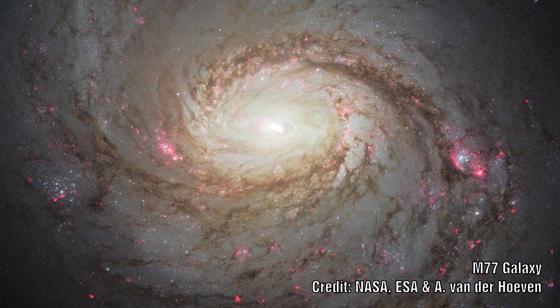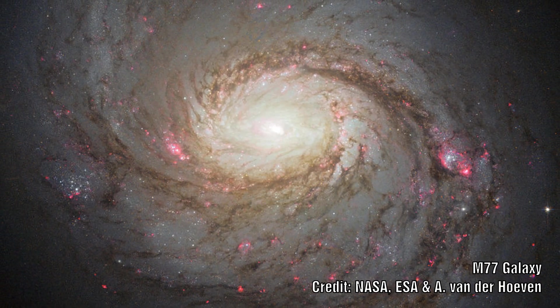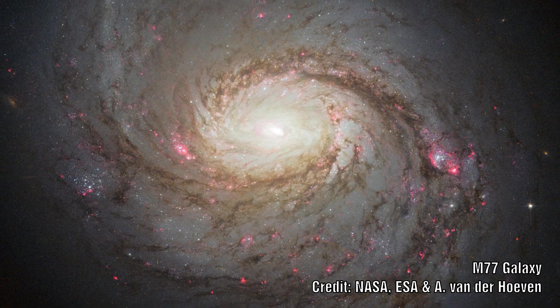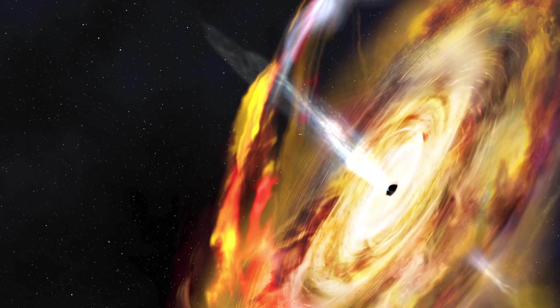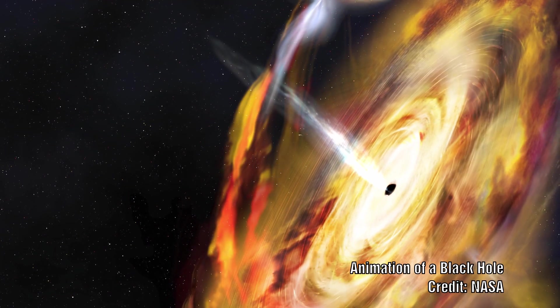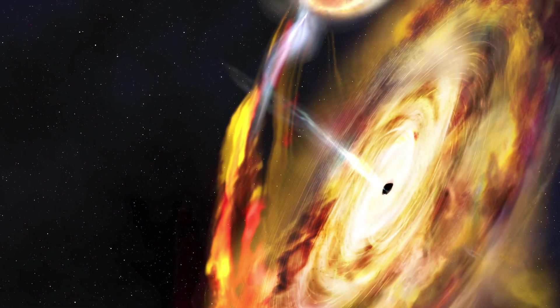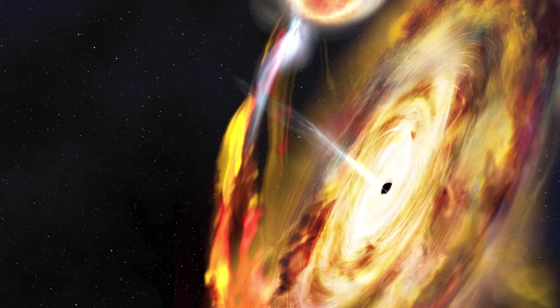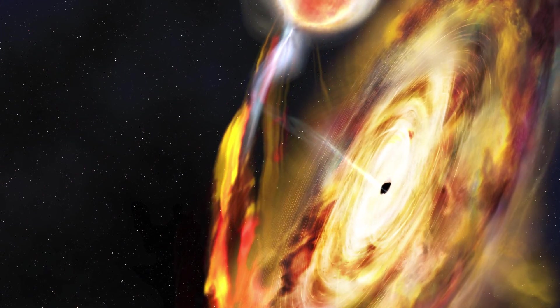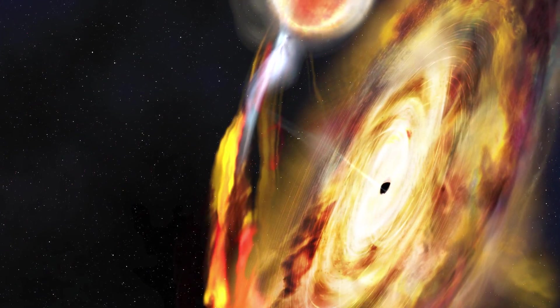At the heart of the galaxy called M77 lies what astronomers believe is a supermassive black hole. Around this lies a large donut-shaped cloud of dust and gas. Recently, ALMA Array was used to get a more detailed view of this gas, and what they discovered, they struggled to explain.